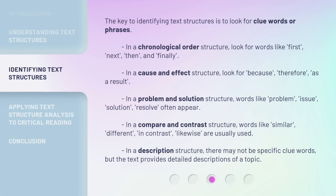The key to identifying text structures is to look for clue words or phrases. In a chronological order structure, look for words like first, next, then, and finally. In a cause and effect structure, look for because, therefore, as a result. In a problem and solution structure, words like problem, issue, solution, and resolve often appear.